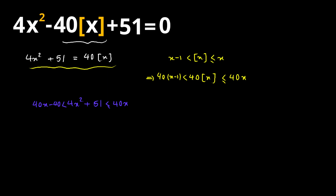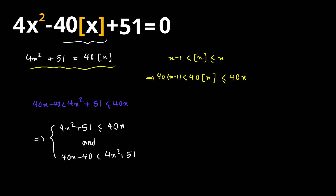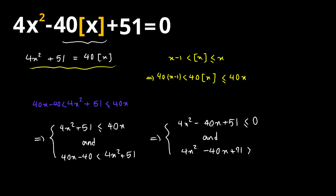Next, let's rewrite these two inequalities separately. I want 4x squared plus 51 to be less than or equal to 40x, and I want 40x minus 40 to be less than 4x squared plus 51. We can rewrite these more neatly as: 4x squared minus 40x plus 51 ≤ 0, and 4x squared minus 40x plus 91 > 0.